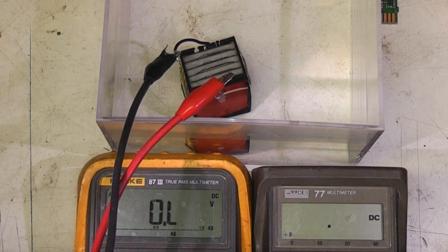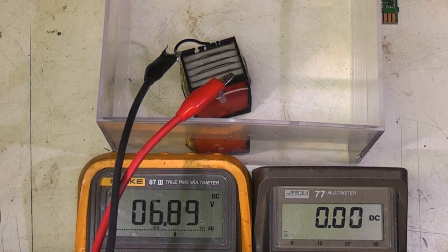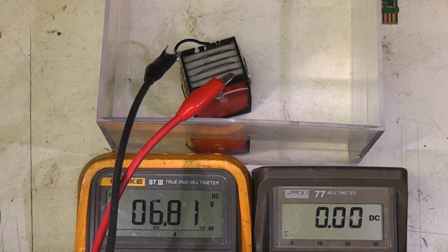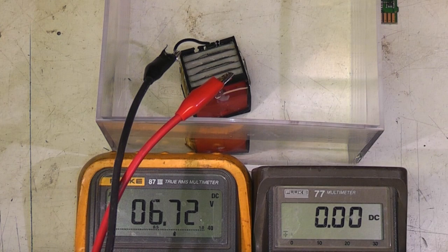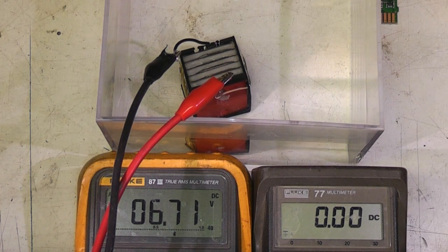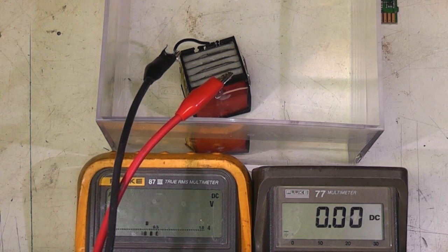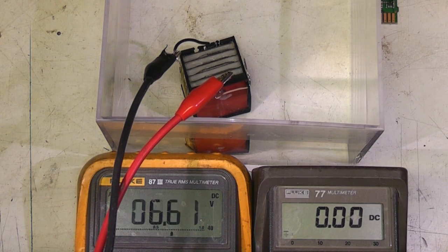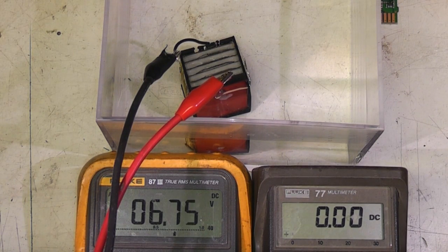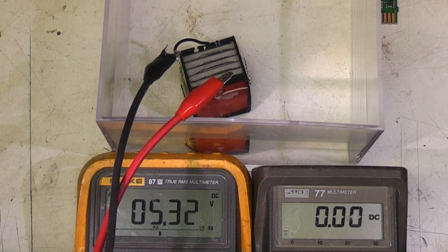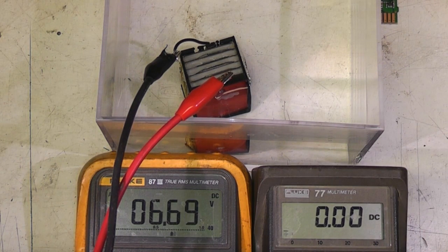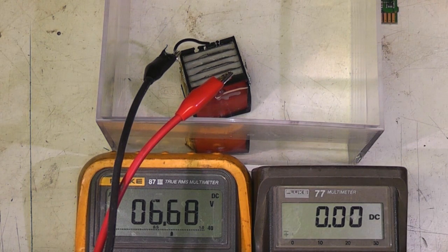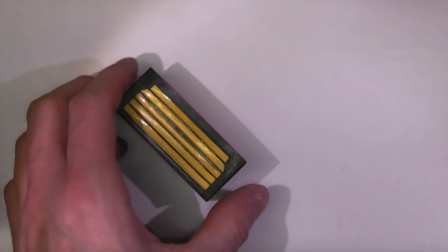Yeah, so we're only getting about 50 milliamp short circuit current. Giving it a slightly more sensible load, just take a 100 ohm load across it. So that would be six volts, about 60 milliamps. Yeah, it's dropping to about half, so it looks like the internal impedance is something of the order of 100 ohms. About five volts, that's about 25 milliamps, so yeah it looks like it's probably designed for something around the 25 milliamp sort of region.